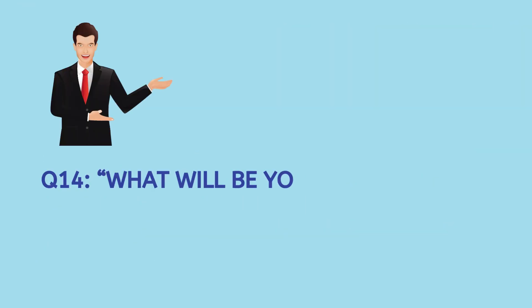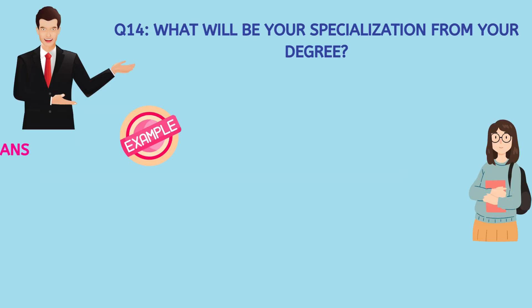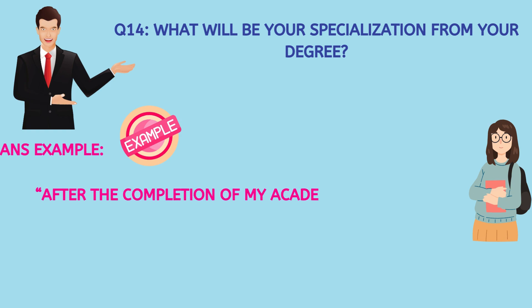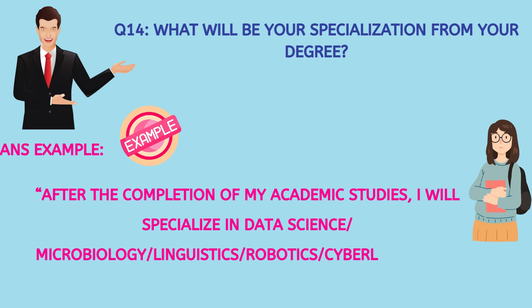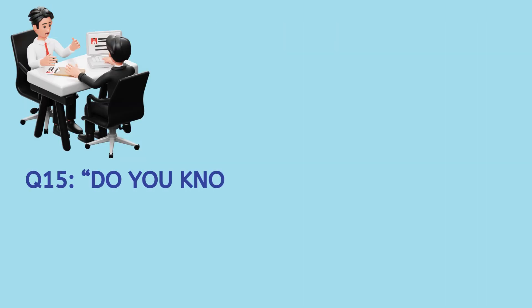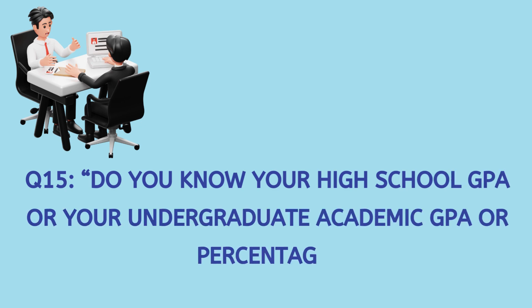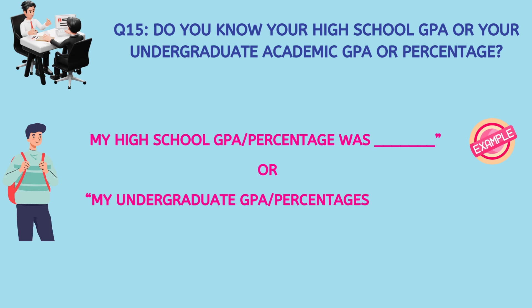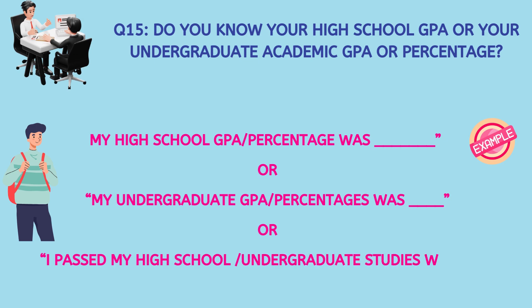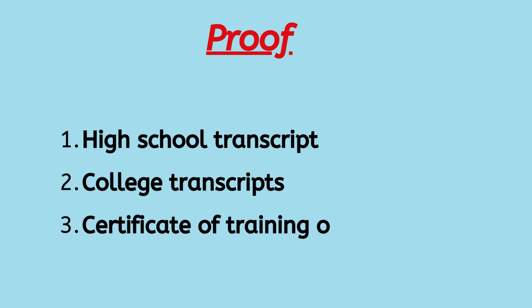The next question could be: what will be your specialization from your degree? You could simply answer, for example, after the completion of my academic studies, I will specialize in data science, data analytics, microbiology, linguistics, robotics, or cyber law, etc. They could also ask: do you know your high school GPA or undergraduate academic GPA or percentage? Here you can say, 'My high school GPA was this,' or 'My undergraduate GPA or percentage was this.' As a proof, please carry your high school transcripts, your college transcripts, and certificates of training or any other certifications that you might have done.